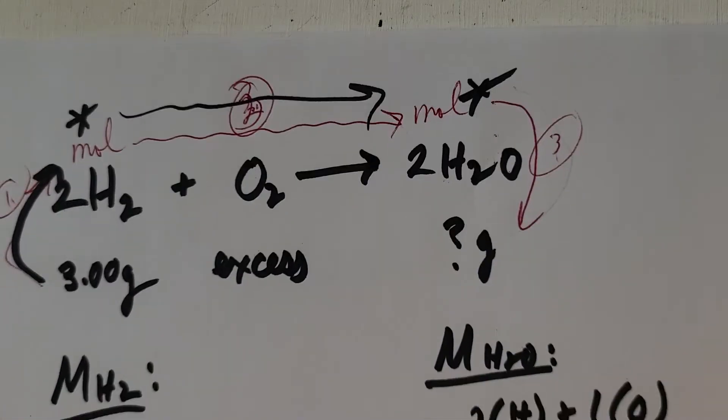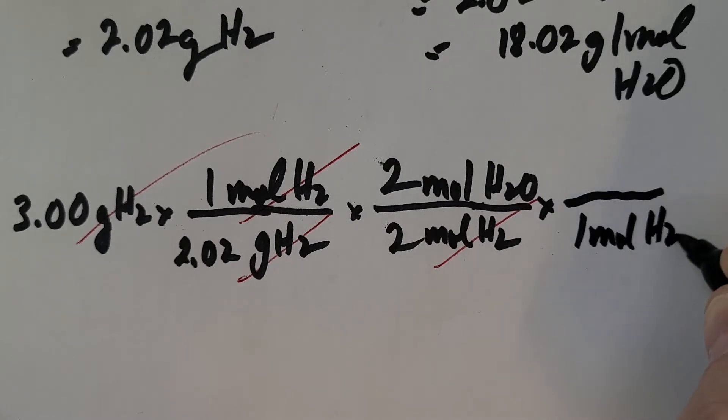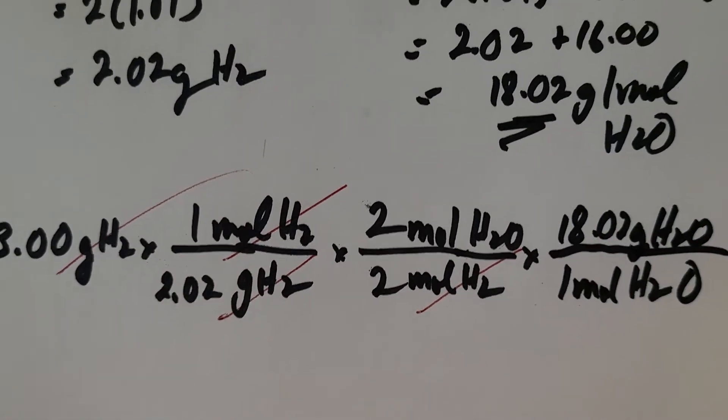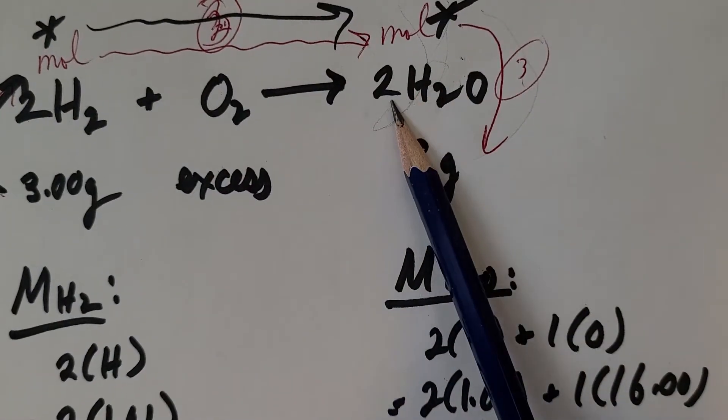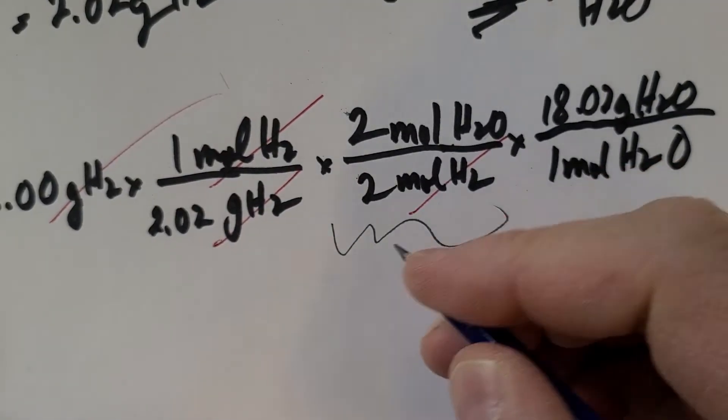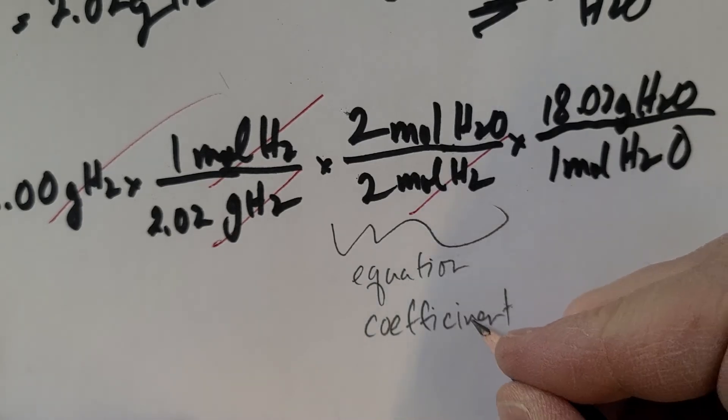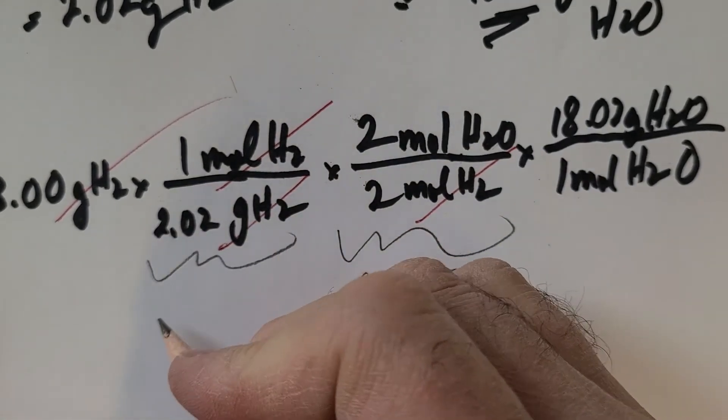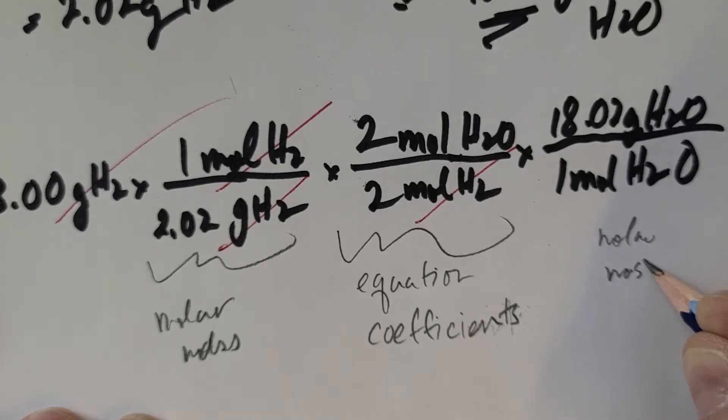So the last step, I need to change into grams. And to do that, for every one mole of H2O, it's 18.02 grams of H2O. The common mistakes that people make is that they take this two and they somehow think that this gram molar mass is per two moles. No, these coefficients only come into play in the middle step. Equation coefficients. So those come into play in the middle space. Over here, it's just simply a molar mass. Use your molar mass. So we're always talking about grams per one mole.